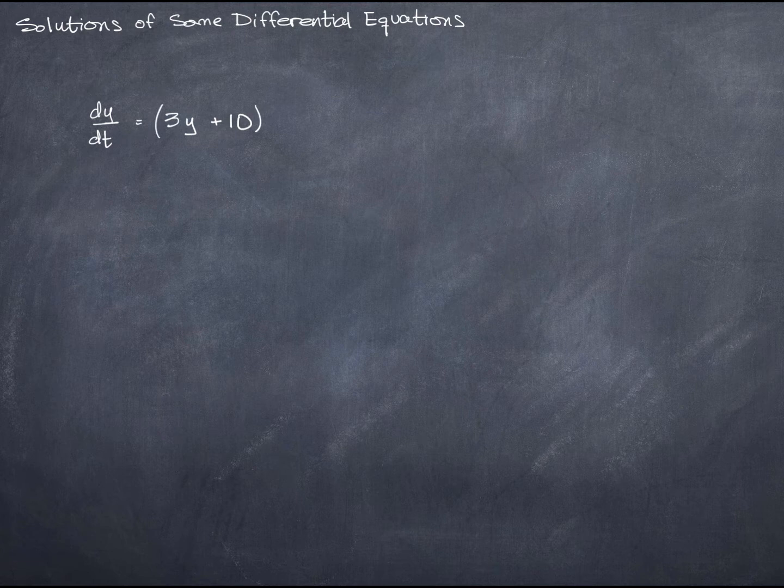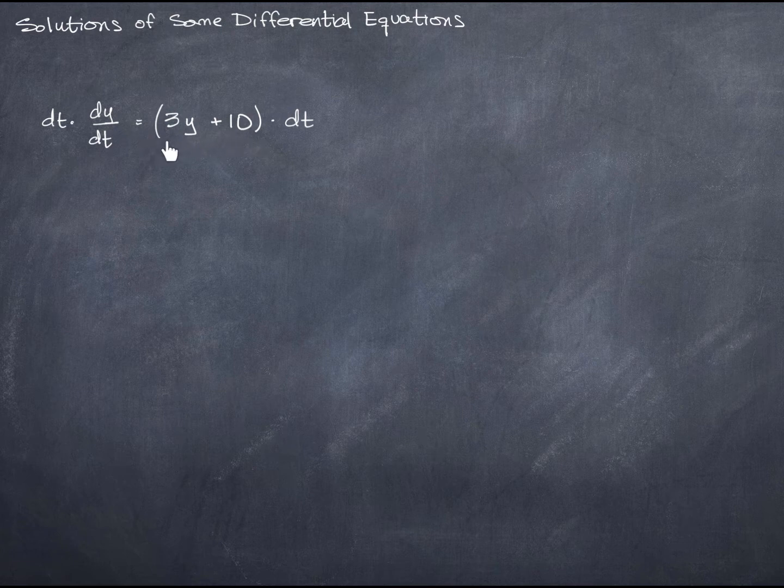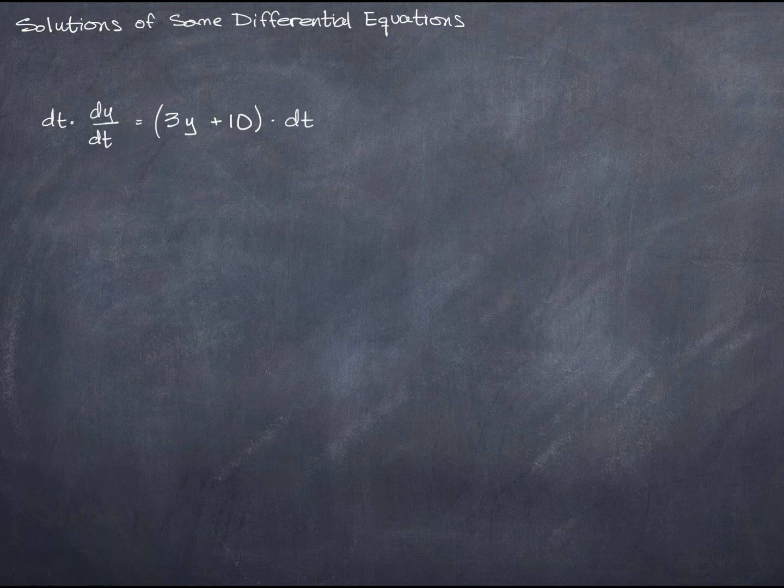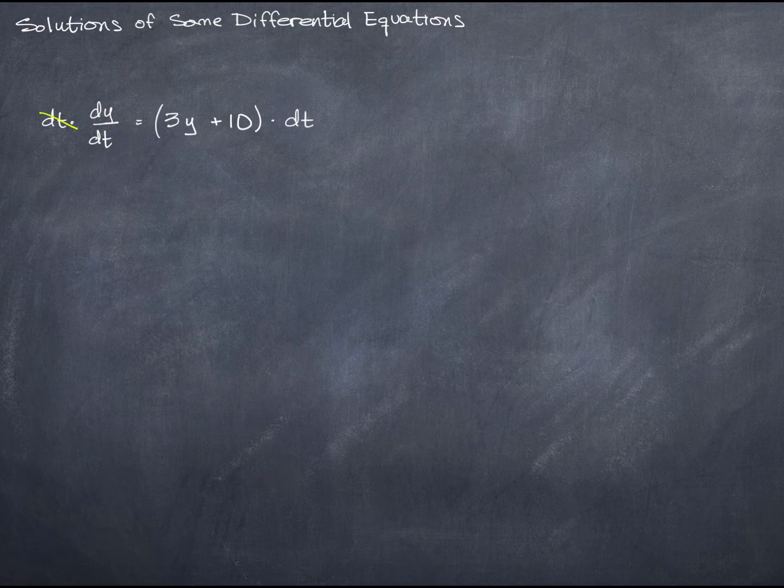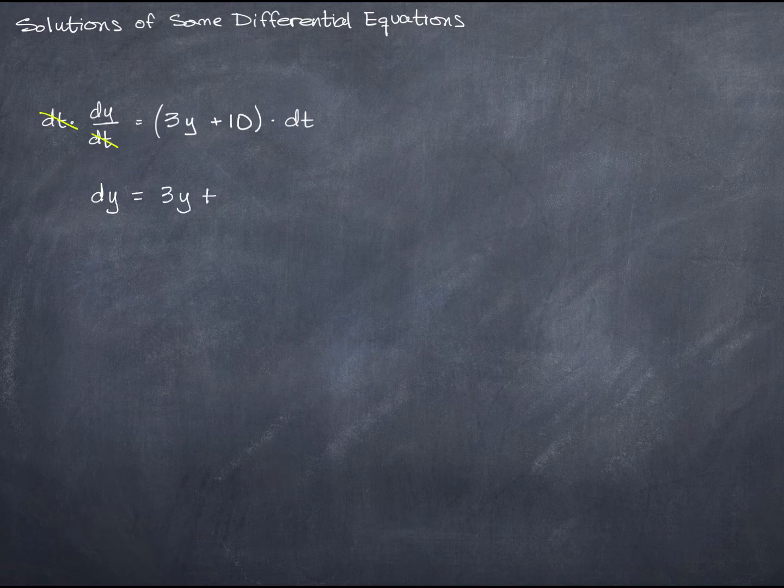Actually, what I'm going to do first is multiply by dt. But when I do that, notice that I have to multiply the whole right-hand side by dt. So that kind of captures that expression 3y plus 10 anyway. Now that I've done that, I can cancel my dt's on the left.